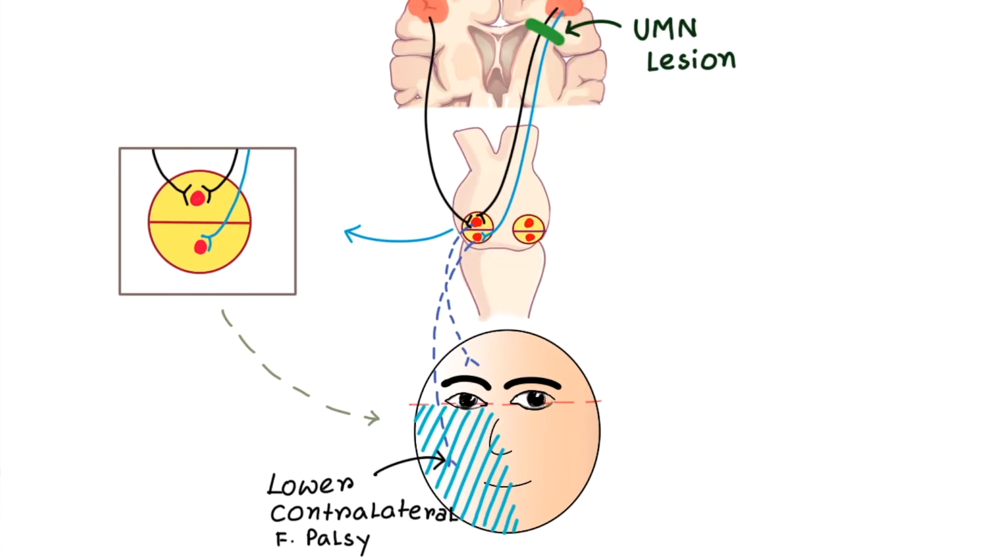Question is why not the upper facial muscles? This is because of the ipsilateral innervation. Upper facial musculature receives bilateral innervation. This concept is very important.